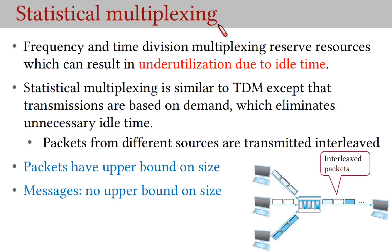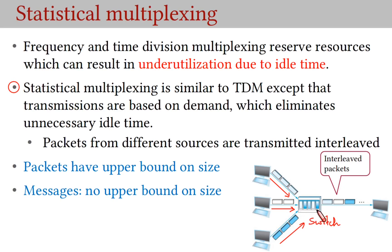Statistical multiplexing is a cost-effective way to share network resources at packet-level granularity. It is basically a fancy name for transmitting packets from different sources in an interleaved manner. It is also called STDM, which stands for statistical time division multiplexing. As packets from different sources arrive at a switch or router, they are stored in a buffer, and the switch inspects the packet header to make a forwarding decision. Thus in statistical multiplexing, the multiplexing is on demand, which eliminates unnecessary idle time.